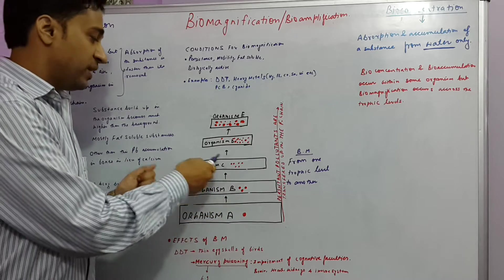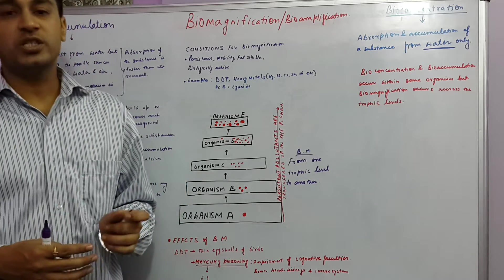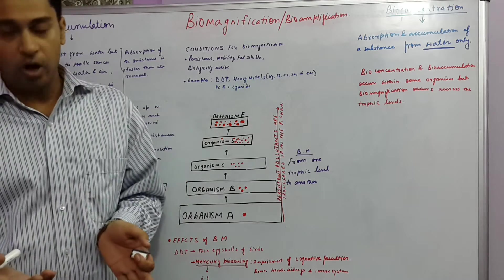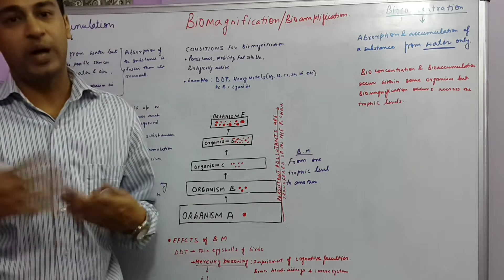And similarly when C would eat B, it would eat several B's. So the concentration would increase even further. And as we move to the highest level of the food chain, the concentration of the persistent pollutant would increase by leaps and bounds.